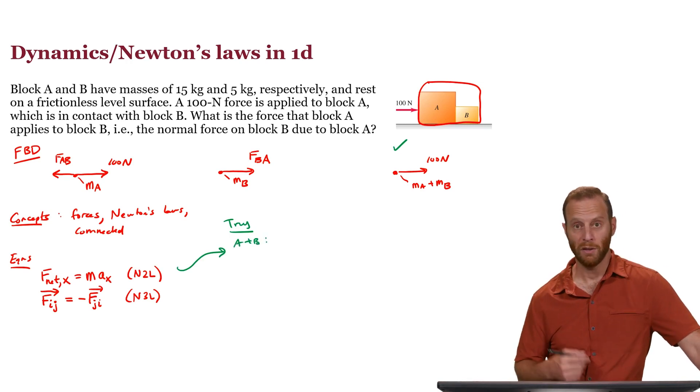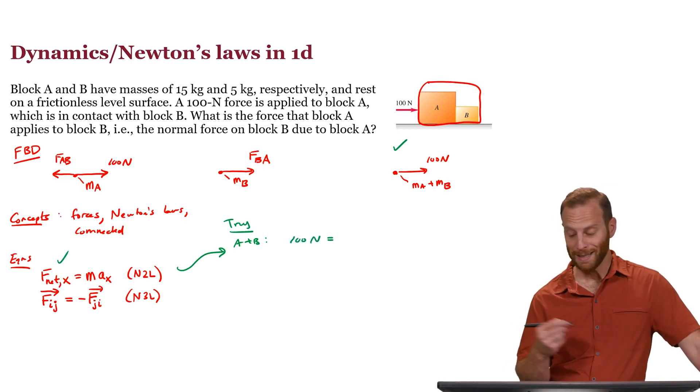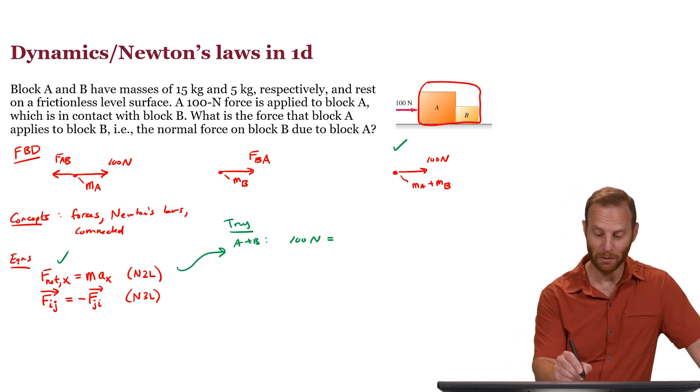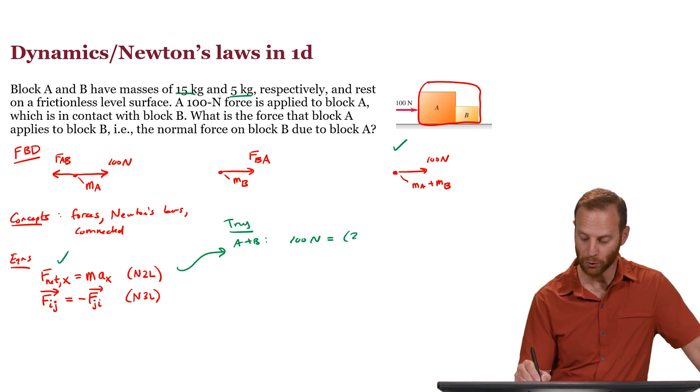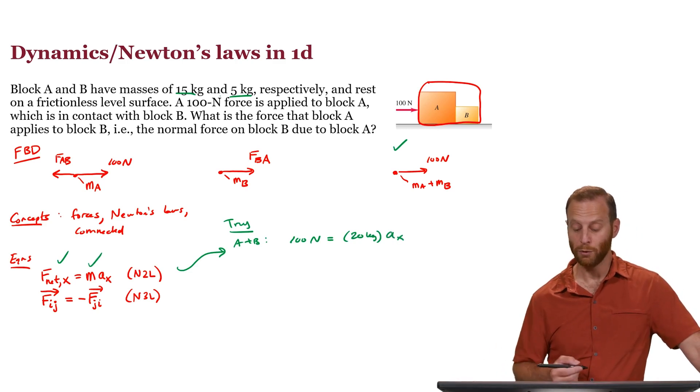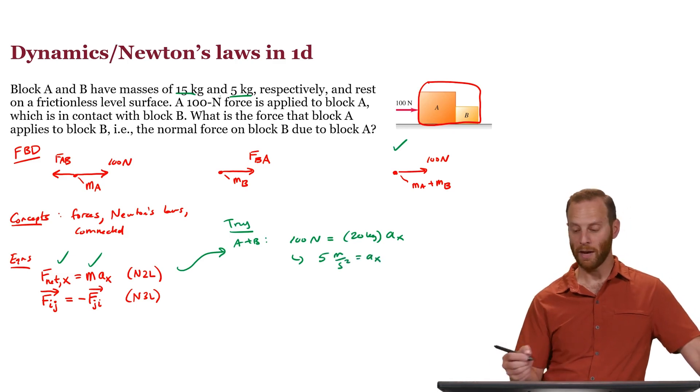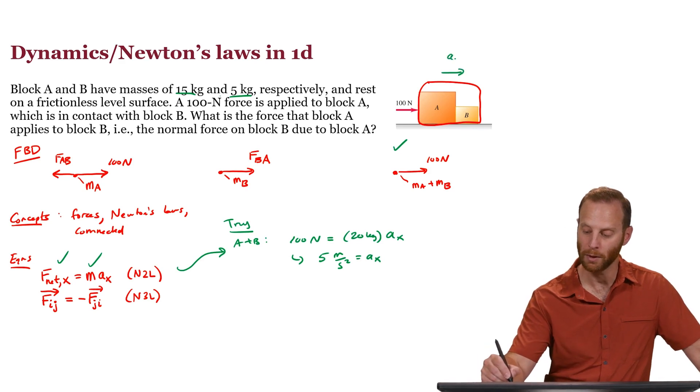So, the net force in the x direction, we can see it's simply 100 newtons. The mass of the object is the mass of A and B added together. 15 plus 5 kilograms, that's 20 kilograms. The acceleration is now easy to solve for. Divide by 20 and you learn that 100 over 20, which is 5. 5 meters per second squared is the acceleration of that system. So, I could draw that on the picture here. Ax is equal to 5 meters per second squared.